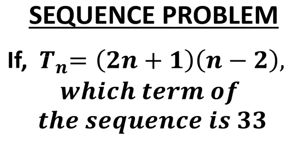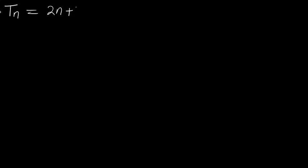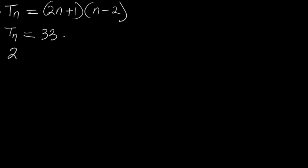We are given the nth term equal to (2n + 1)(n - 2). We are looking for the value of n when the nth term is equal to 33. So that means (2n + 1)(n - 2) = 33. Let's open up this bracket.